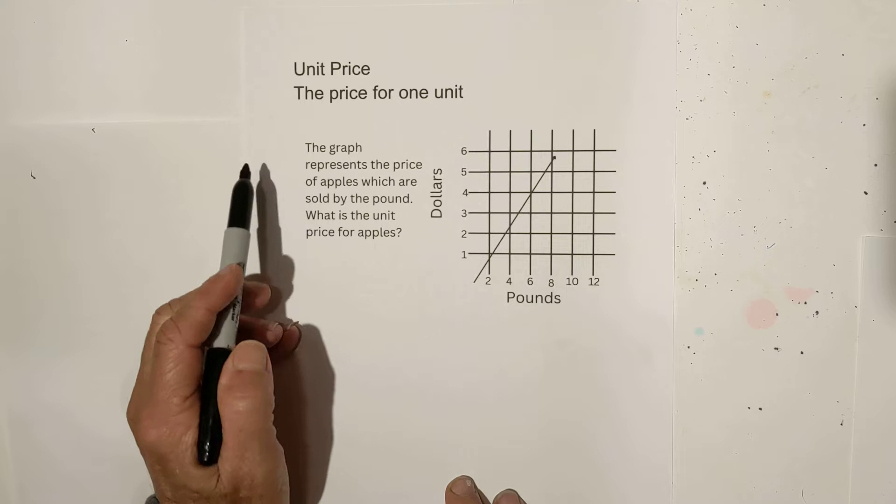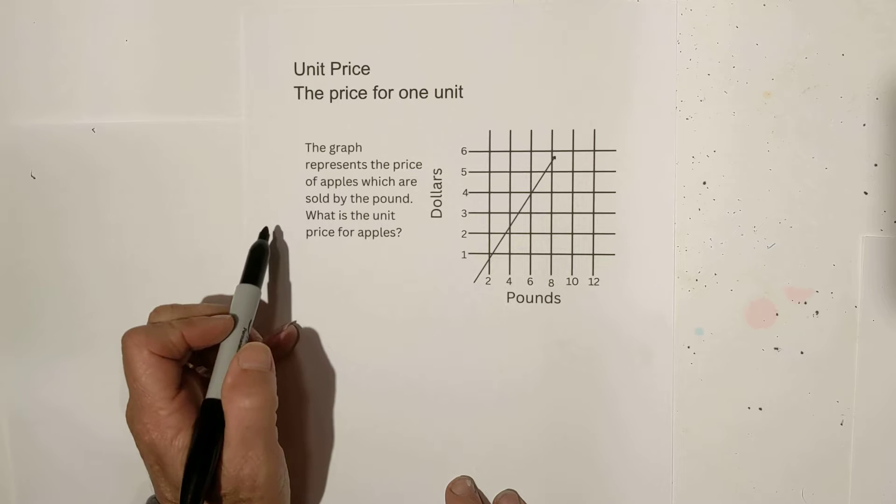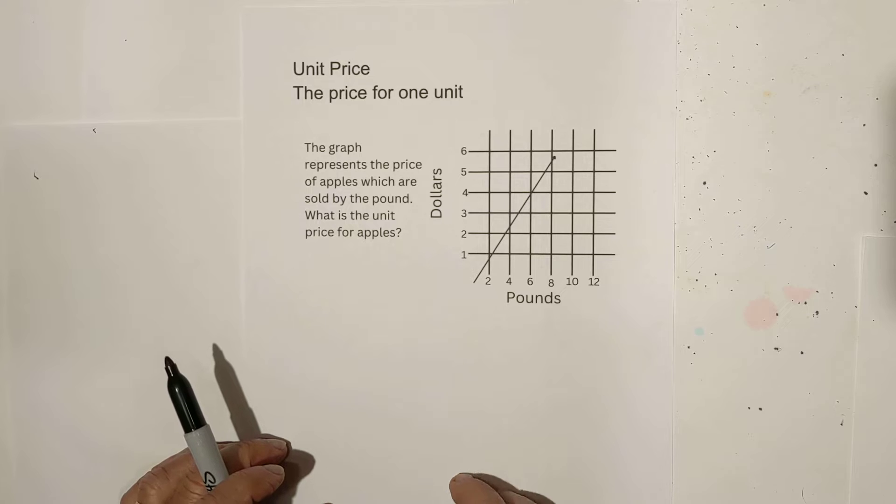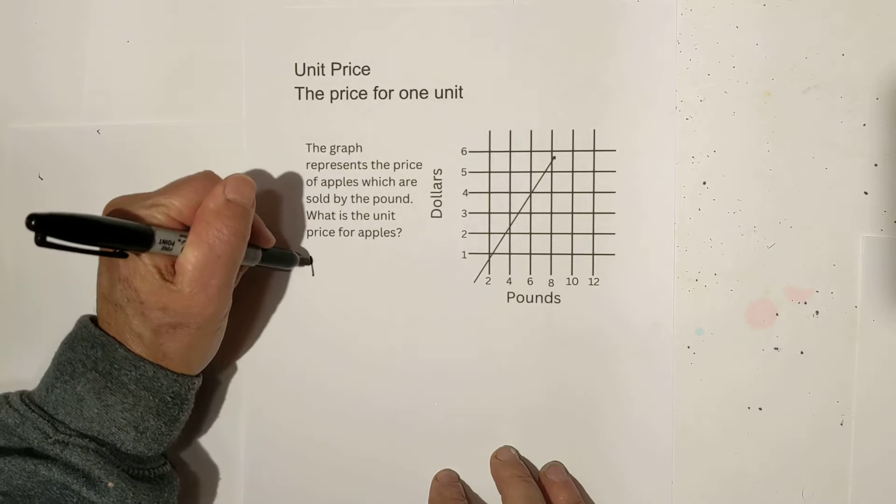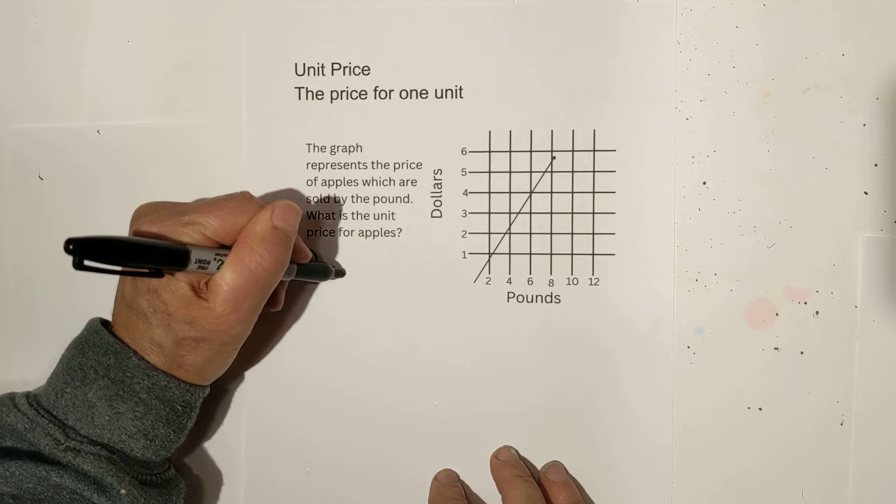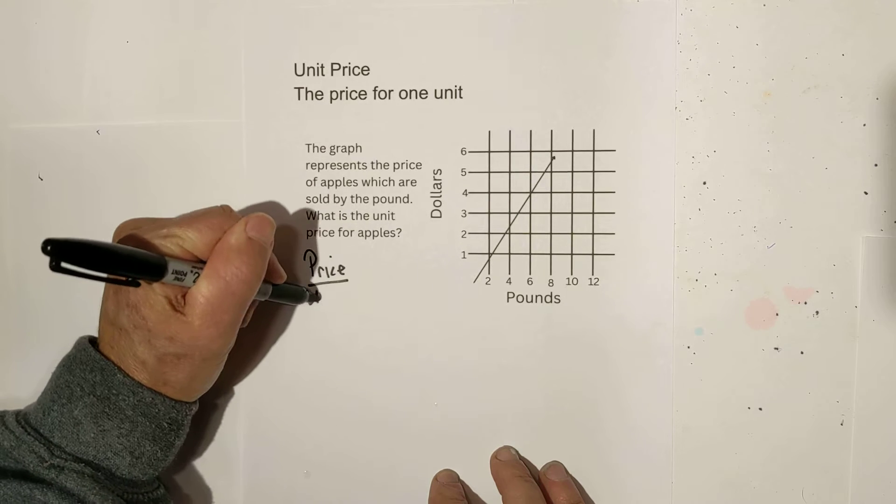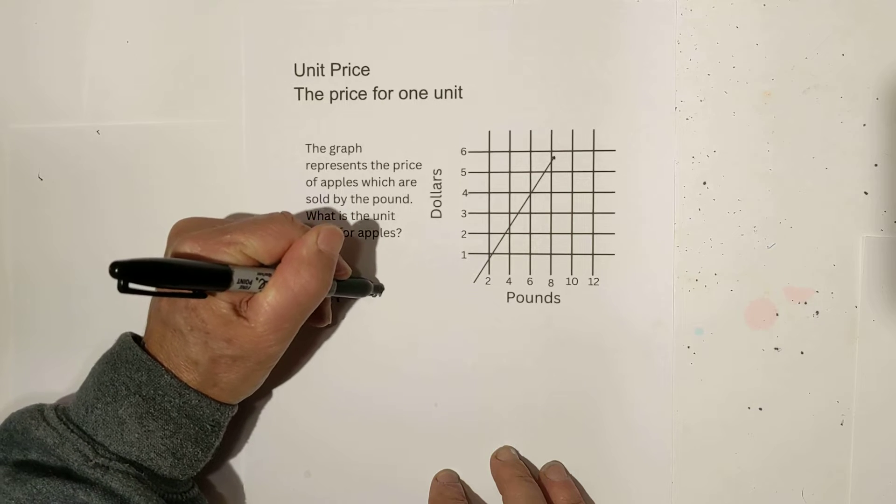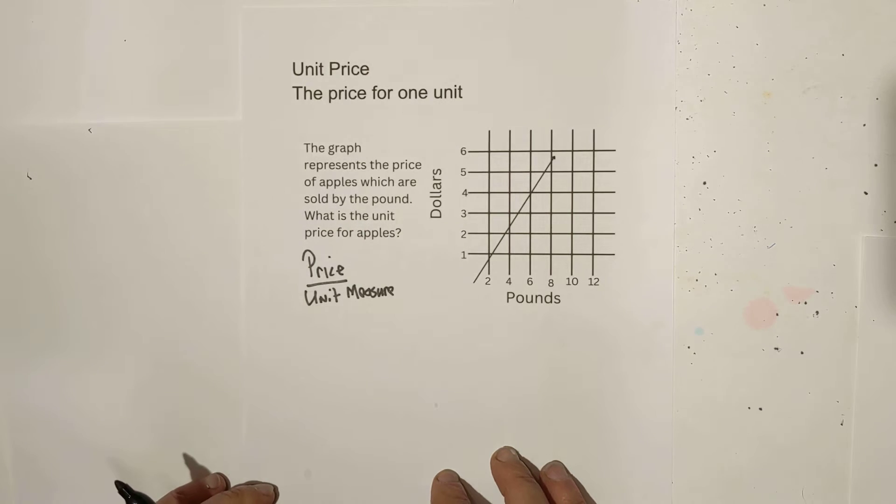Problem one: The graph represents the price of apples which are sold by the pound. What is the unit price for apples? In other words, what's it cost for one unit? The key is you use price over the unit measure. And in this example, you're using pounds. So let's just fill in what we have.